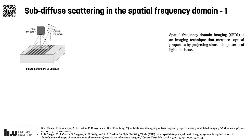Spatial frequency domain imaging, or SFDI for short, is a spectral imaging technique that can be used to quantitatively measure optical properties in tissue, by illuminating them with patterns of light.